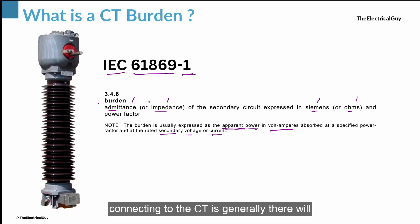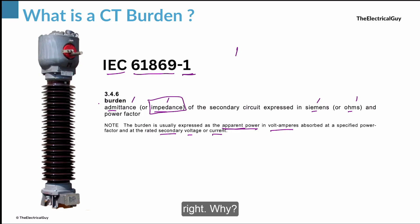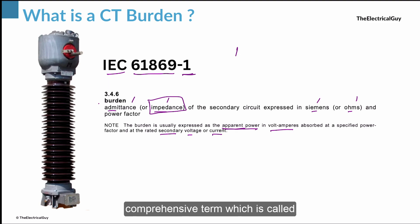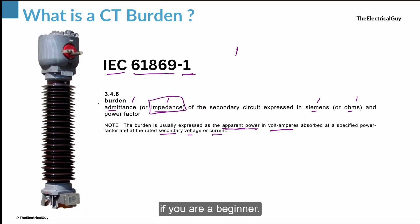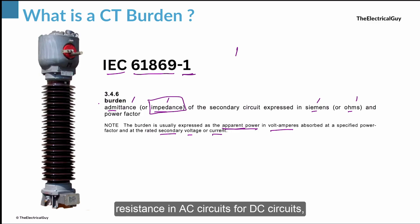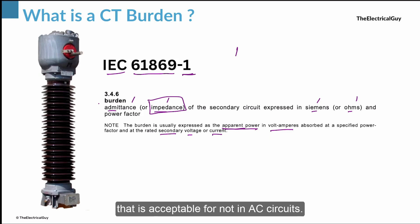The load connected to the CT — relays and meters — is generally a resistive load. However, in AC circuits we use the more comprehensive term 'impedance' rather than resistance, because impedance accounts for all components in an AC circuit. We have talked about impedance in detail in the AC circuits playlist if you want to check that out. That is why we refer to it as impedance and not resistance in AC circuits — for DC circuits resistance is acceptable, but not for AC.